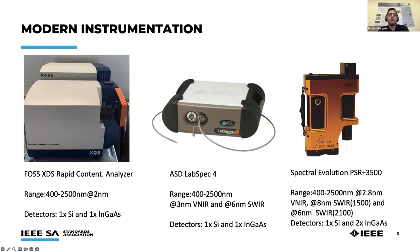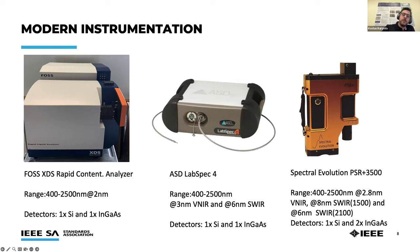I'll highlight three spectrometers. The first is the FOSS XDS Rapid Content Analyzer, used for developing the LUCAS soil spectral library, with two detectors and a nominal resolution of 2 nanometers. The second is the ASD LabSpec — and also the ASD FieldSpec — one of the best sellers used extensively for soil spectroscopy applications, with two detectors and nominal resolutions of 3 nm in visible/NIR and 6 nm in SWIR. The third is the Spectral Evolution PSR+ 3500, used by our laboratory, which can operate as both benchtop and portable, with three detectors and resolutions of 2.8 nm in visible/NIR, 8 nm at lower SWIR, and 6 nm at upper SWIR.